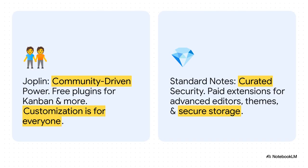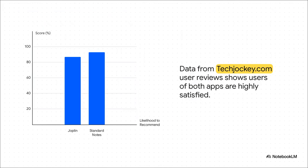At the end of the day, it really boils down to two different philosophies on how you extend an app. Joplin's power comes from its open, vibrant, community-driven world where anybody can build and share a plugin. Standard Notes, on the other hand, takes more of a walled garden approach — its extensions are professionally developed and curated to meet the exact same high security standards as the main app. One is all about freedom and community; the other is about control and assurance. According to data from Tech Jockey, both apps are very well liked, but Standard Notes has a little bit of an edge in its likelihood-to-recommend score, suggesting that people who choose its focused, secure path are incredibly happy with it — they get exactly what they signed up for: simplicity and total peace of mind.